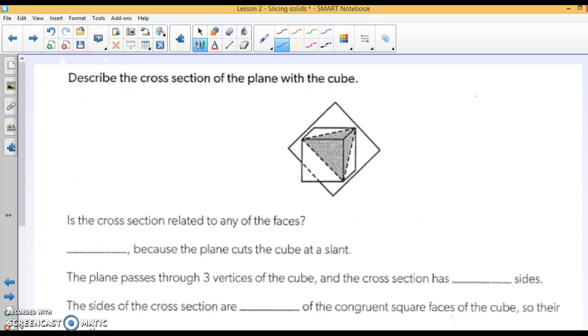Describe the cross-section of slicing this cube. So we're slicing basically a corner off of a cube, right here. Is the edge of the cut the cross-section? Is the cross-section related to any of the faces? No. Well, it's diagonal on them. It's not perpendicular or parallel.